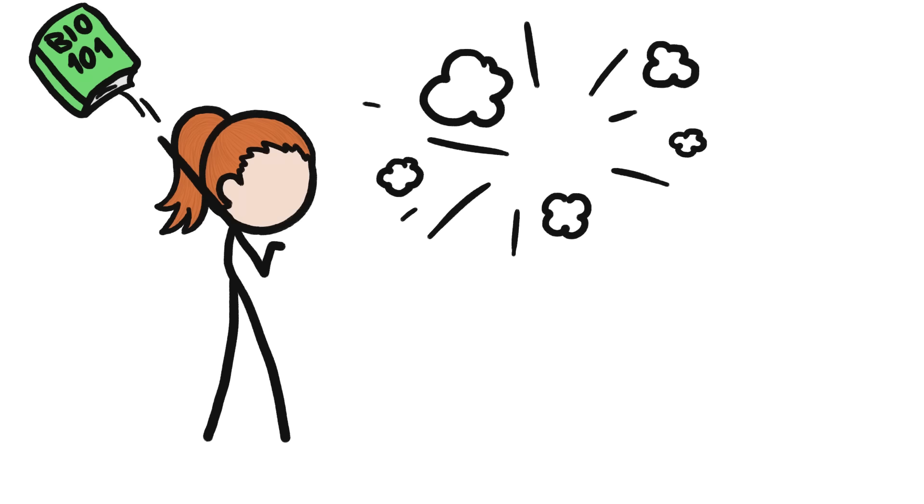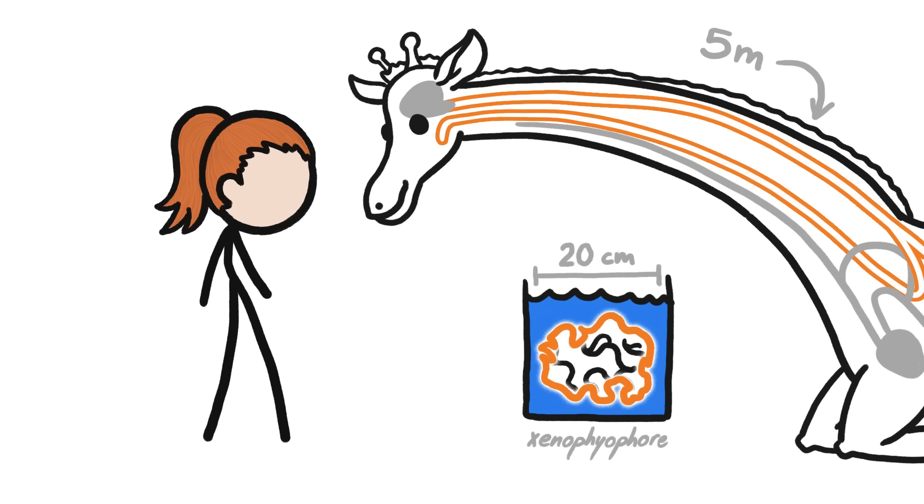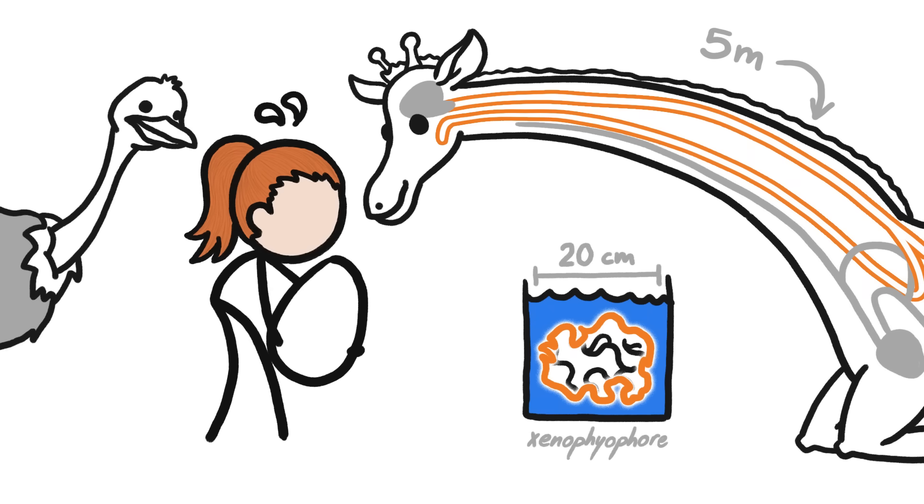But cells don't have to be small. A single-celled organism known as a xenophophore can get nearly as big as a volleyball — one cell in a single membrane. And the nerve cell that connects a giraffe's larynx to its brain can be several meters long. But the heaviest cell on our planet today exists in here.